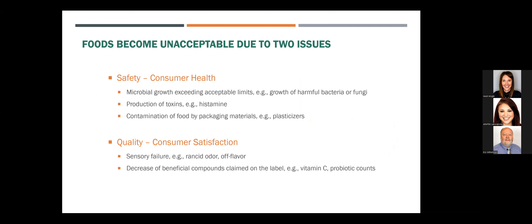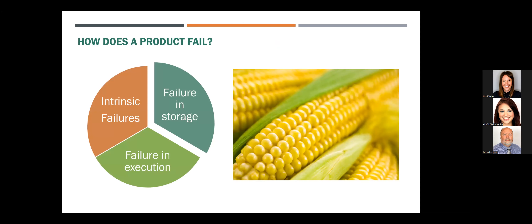There are two big categories that limit shelf life. There is the safety aspect — hurting people is not acceptable. We have microbial growth, toxins causing illness, and off flavors as safety issues. The other side is quality or customer satisfaction — when the product ceases to provide the desired benefits. There are three big classes of failure: failure in storage, things that fail because of the product itself, and sometimes people make mistakes.